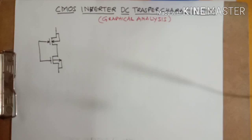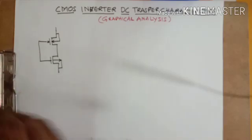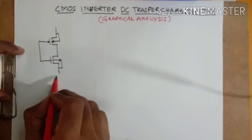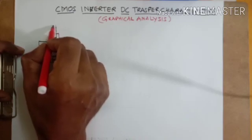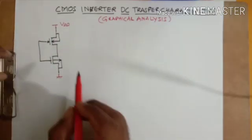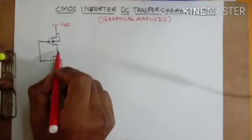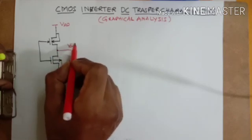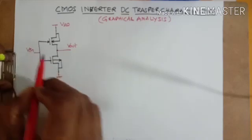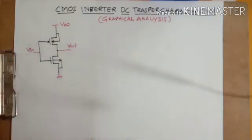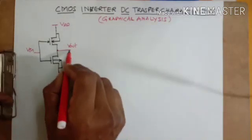Here we see the CMOS inverter DC transfer characteristics graphical analysis. This is a CMOS inverter — complementary metal oxide semiconductor — so we have a PMOS transistor and an NMOS transistor. The NMOS source is grounded, and the PMOS source is connected to VDD power supply. Both drains are connected together, output is taken from that common point as VOUT, both gates are connected together as VIN, and we connect a load capacitor here.